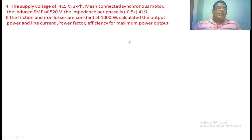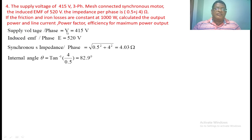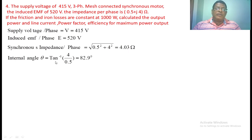Now come to the fourth numerical. A supply voltage of 415 V, 3-phase mesh-connected synchronous motor has an induced EMF of 520 V. The impedance per phase is 0.5 + j4 ohms. The friction and iron losses are constant at 1000 watts. Calculate the output power, line current, power factor, and efficiency for maximum power output. Supply voltage per phase equals 415 V since it is delta connected; induced voltage per phase is 520 V. Synchronous impedance Zs equals square root of Ra² plus Xs², giving 4.03 ohms. Internal angle theta equals tan inverse of 4 by 0.5, giving 82.9 degrees.